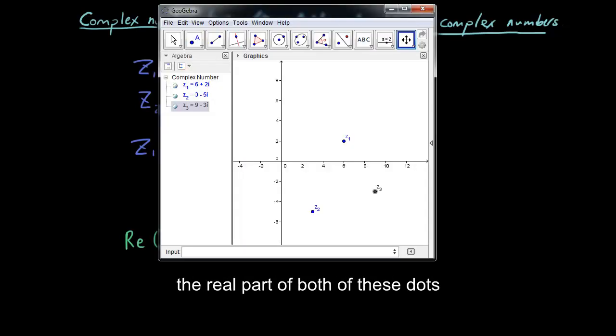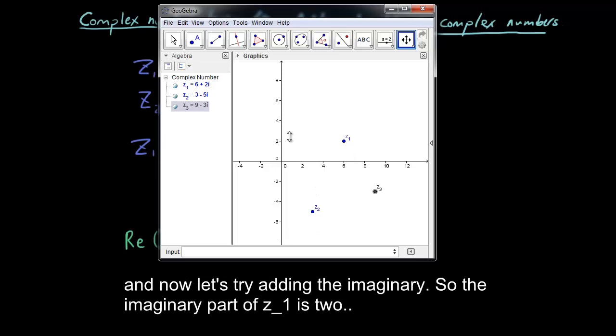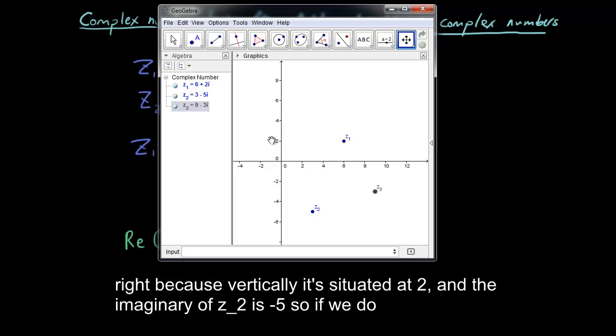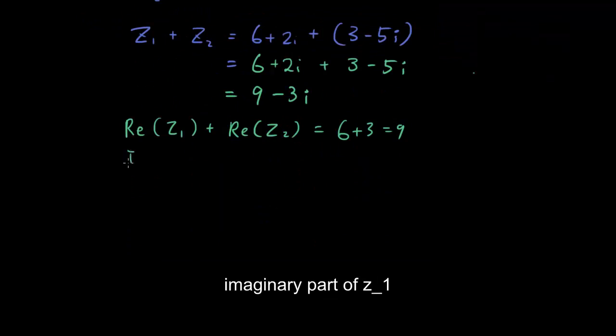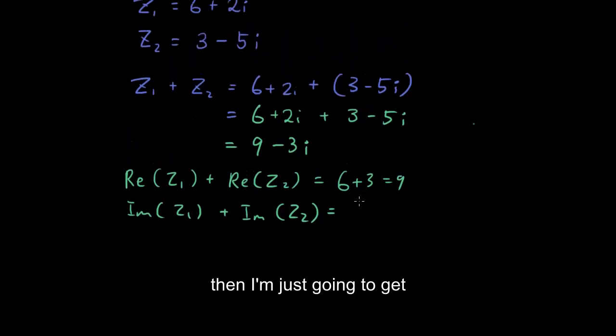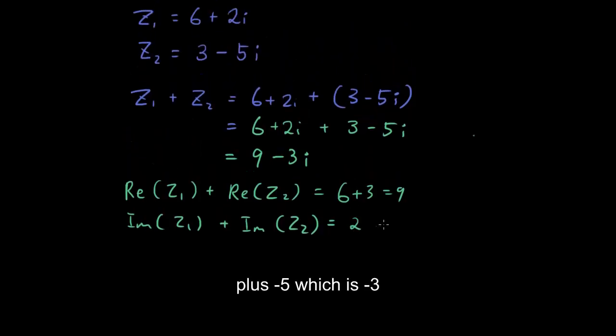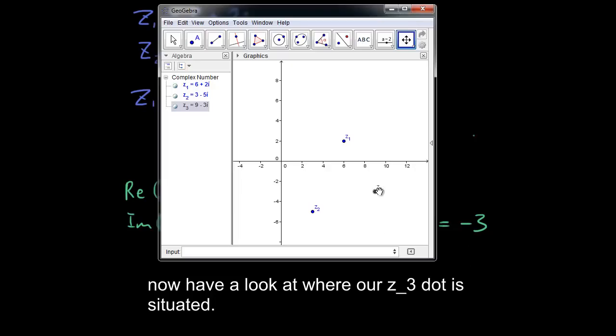So we've added the real part of both of these dots. And now let's try adding the imaginary part. So the imaginary part of z1 is 2. Right, because vertically it's situated at 2. And the imaginary part of z2 is negative 5. So if we do imaginary part of z1 plus imaginary part of z2, then I'm just going to get 2 plus negative 5, which is negative 3.